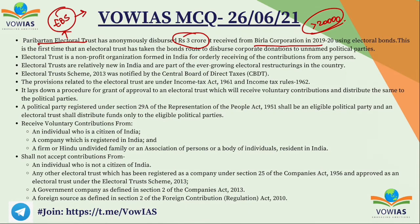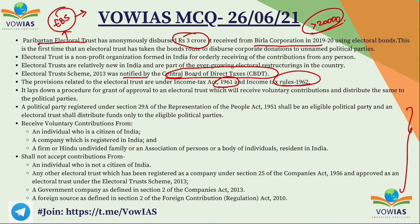The electoral trust was notified by the Central Board of Direct Taxes. Provisions related to electoral trusts are under the Income Tax Act of 1961 and Income Tax Rules of 1962. All funds go to registered political parties under the Representation of People Act 1951. Additional information on who can and cannot donate to political parties is provided — you can pause and go through it, and ask any queries in the comment box.